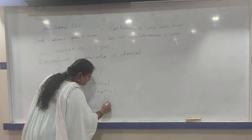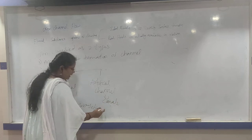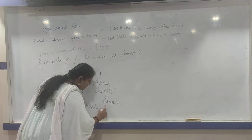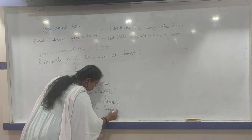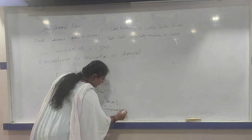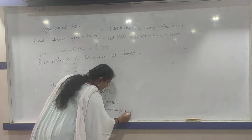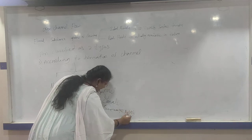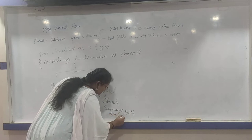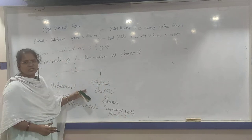Examples of artificial channels include canals, sewage plants, supply pipes, etc. These are the artificial channels.